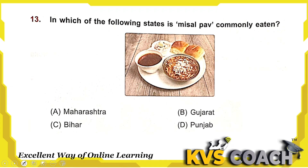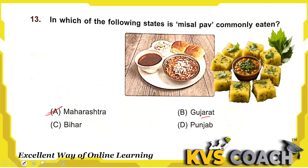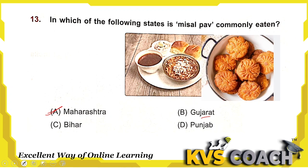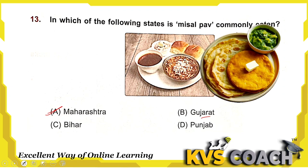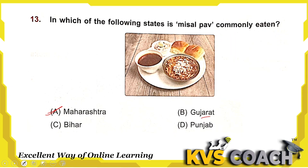Next: in which state is Misal Paav commonly eaten? Misal Paav is a dish from Maharashtra. Gujarat's commonly eaten dish is Dhokla. Bihar's dish is Thekua. Punjab's traditional dish is Makki di Roti and Sarson da Saag. So the right answer is Maharashtra — Misal Paav is from Maharashtra.